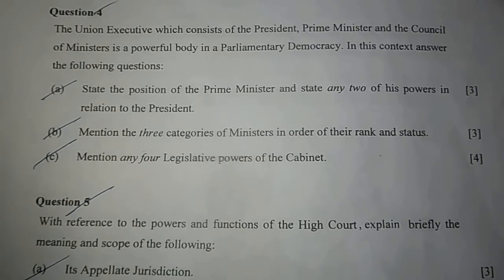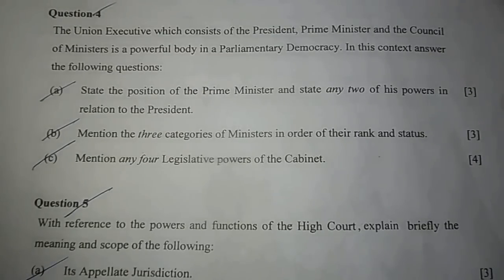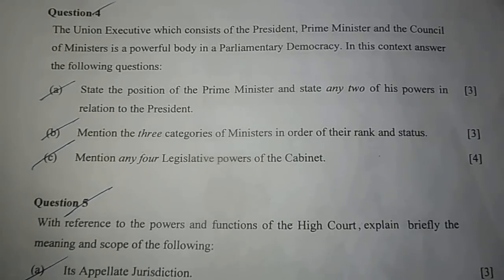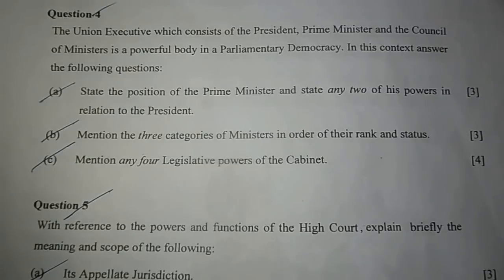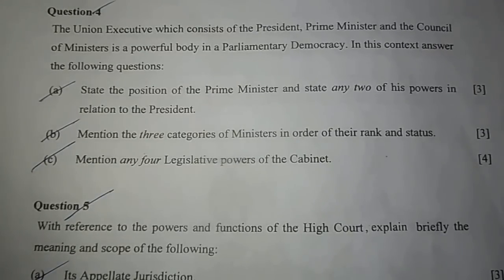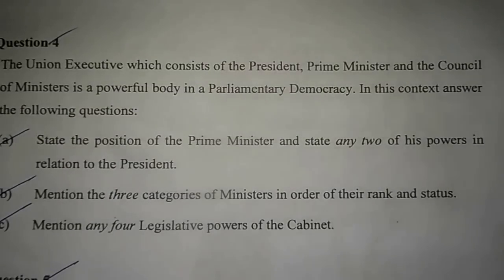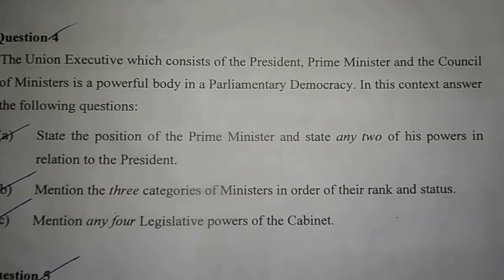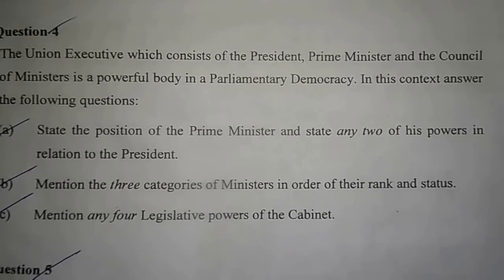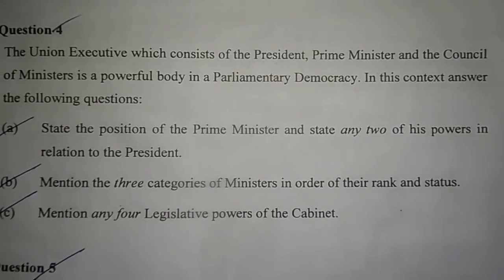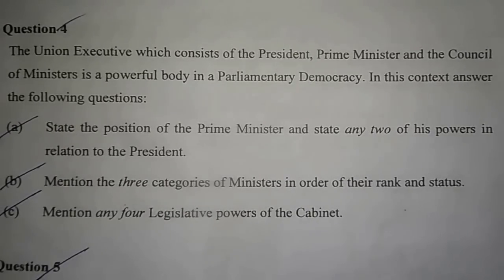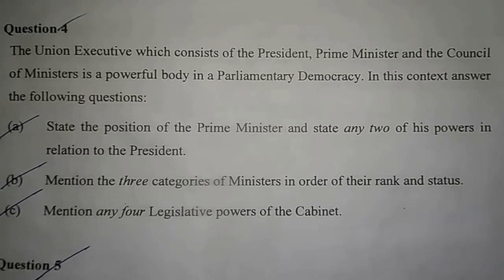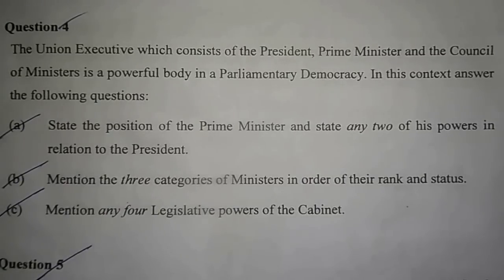B. Mention the three categories of ministers in order of their rank and status. Number 1: cabinet ministers, Number 2: ministers of state, and Number 3: deputy ministers. C. Mention any four legislative powers of the cabinet. Number 1: Although the houses are summoned by the president, initiative in this matter is taken by the Ministry of Parliamentary Affairs. Number 2: The cabinet prepares the president's special address to parliament. Number 3: In the matter of issuing ordinances, the president acts on the advice of the ministers. Number 4: The cabinet is the instrumental body in planning and moving an amendment to the constitution.